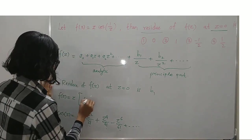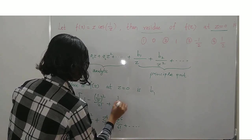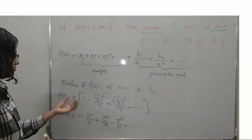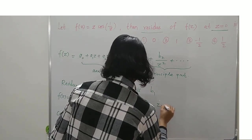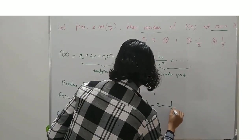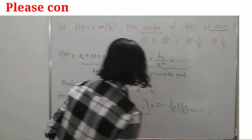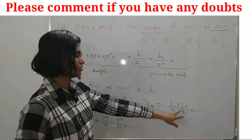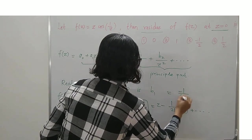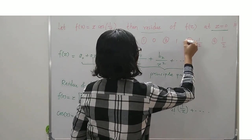cos(1/z) = 1 - 1/z² / 2! + 1/z⁴ / 4! - ... Multiplying by z gives f(z) = z - 1/(2! · z) + 1/(4! · z³) - ... The coefficient of 1/z is -1/2! = -1/2. Therefore the residue is -1/2, so the third option is correct.